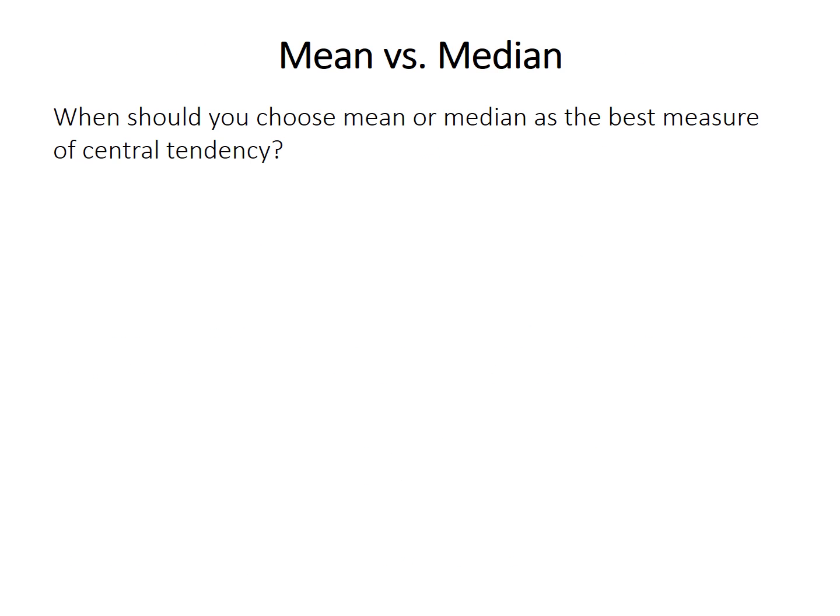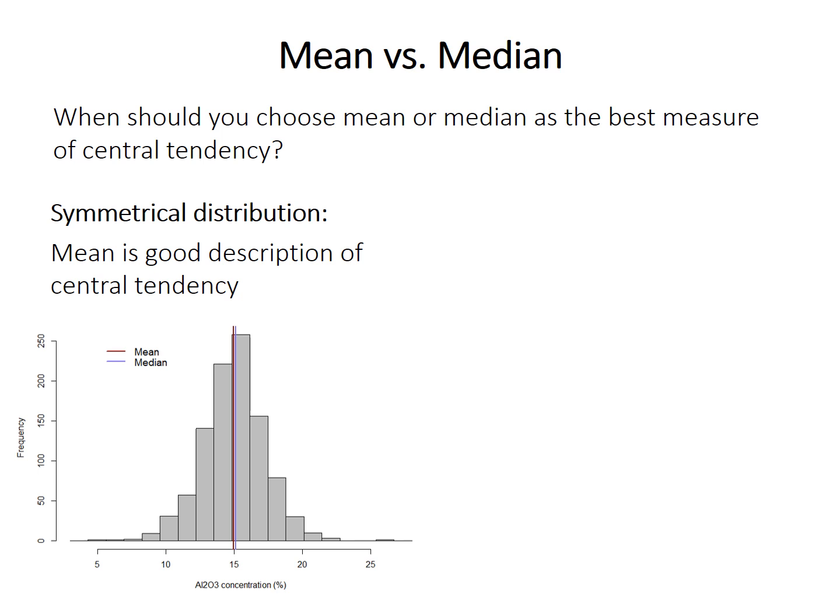So the big question then is, when should you use the mean, and when should you use the median? Let's consider a case where your data follow this symmetrical distribution. So this is a histogram, this graph here, and it basically just divides your measurements into bins, or groups, and then plots the number of values found within each bin. So in this case, the mean and the median are basically the same thing. So in this case, you might as well use the mean as your description of central tendency. If you have a symmetrical distribution, which is a peak in the middle, and both sides are around the same size, the mean is the best measure of central tendency. It's the most precise, it uses the most information.